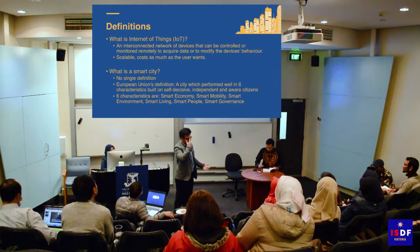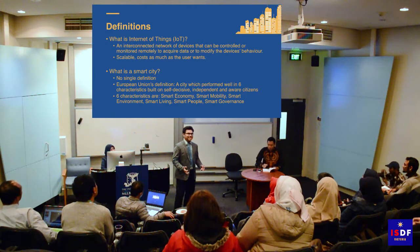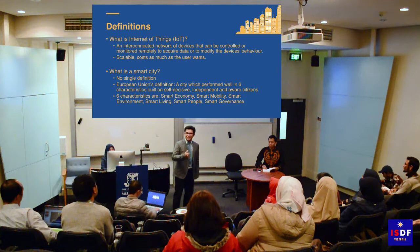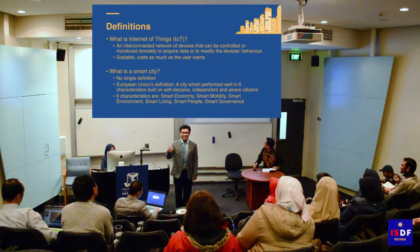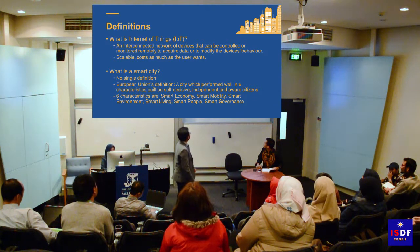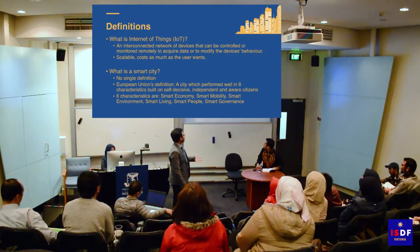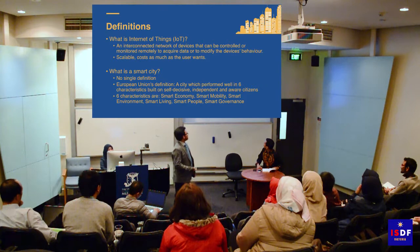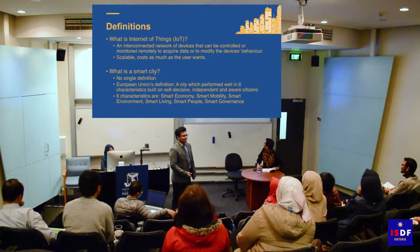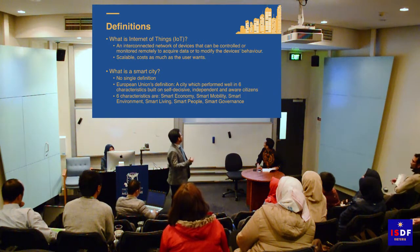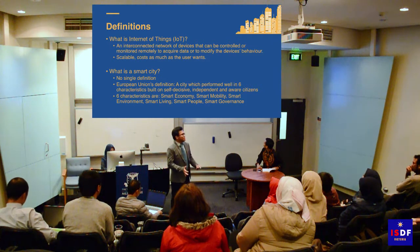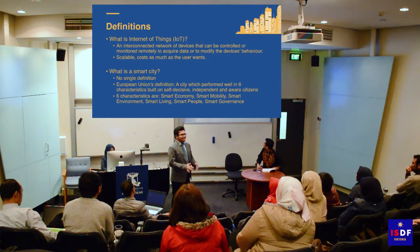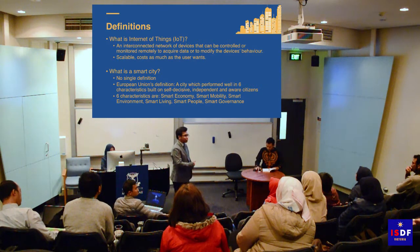I'd also like to touch on the concept of smart city. When you ask different people, you get different definitions — there is no single agreed definition. The definition of smart city in Jakarta might differ from one in Europe. For this presentation, I offer one simple definition: a city which performs well in six characteristics — smart economy, smart mobility, environment, living, people, and governance. I won't delve deeply into these details, as I'd like to focus on technical proposals for replicating this concept in Indonesia.